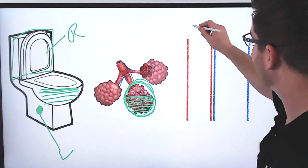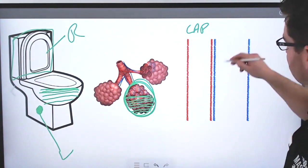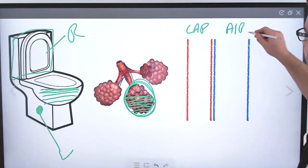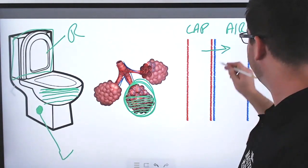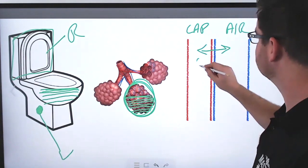So what's happening is the capillaries line up against the airspace of the alveoli. And generally, we have oxygen and CO2